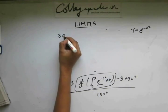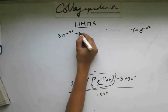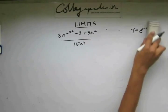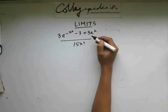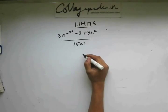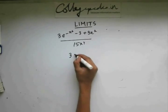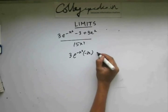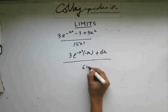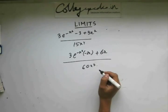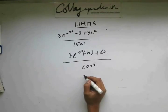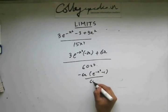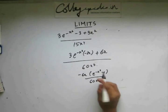This expression gets simplified as 3e to the power minus x squared minus 3 plus 3x squared, all divided by 15x to the power 4. Now, again if I put 0, this is of the form 0/0. So again I can apply L'Hospital's Rule. Applying L'Hospital's Rule, I'll get 3e to the power minus x squared into minus 2x, plus 6x, divided by 60x cubed. I can take minus 6x common, giving e to the power minus x squared minus 1, over 60x cubed. Cancelling x, I'll get minus 6 in the numerator and 60x squared in the denominator, giving 1/10 times (e to the power minus x squared minus 1).